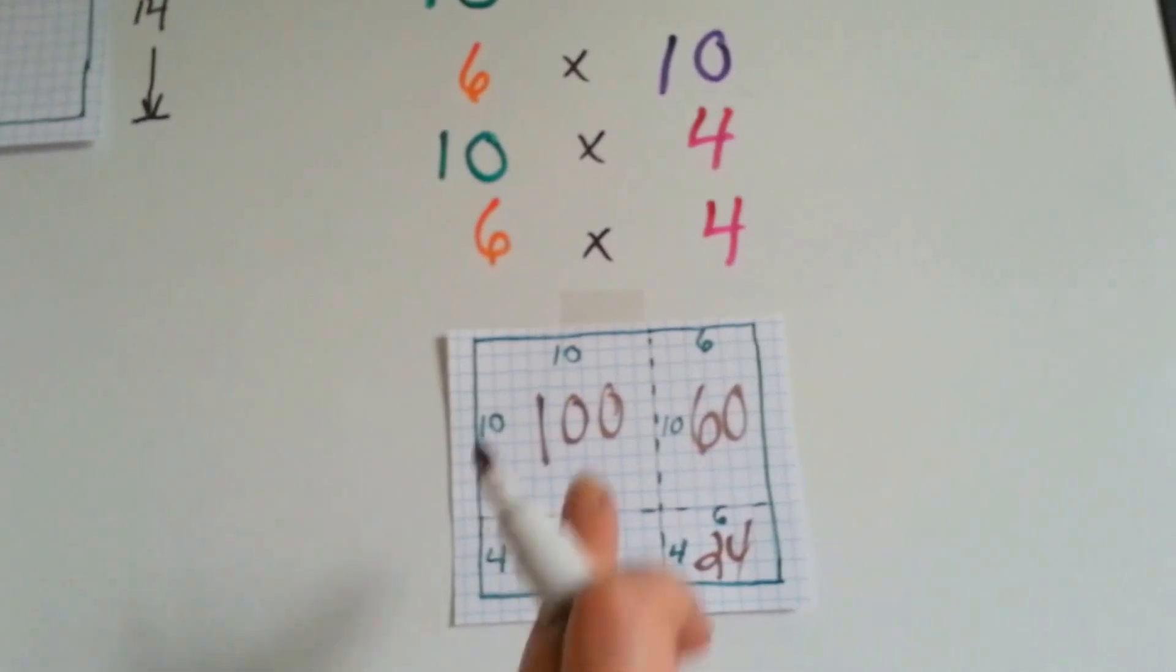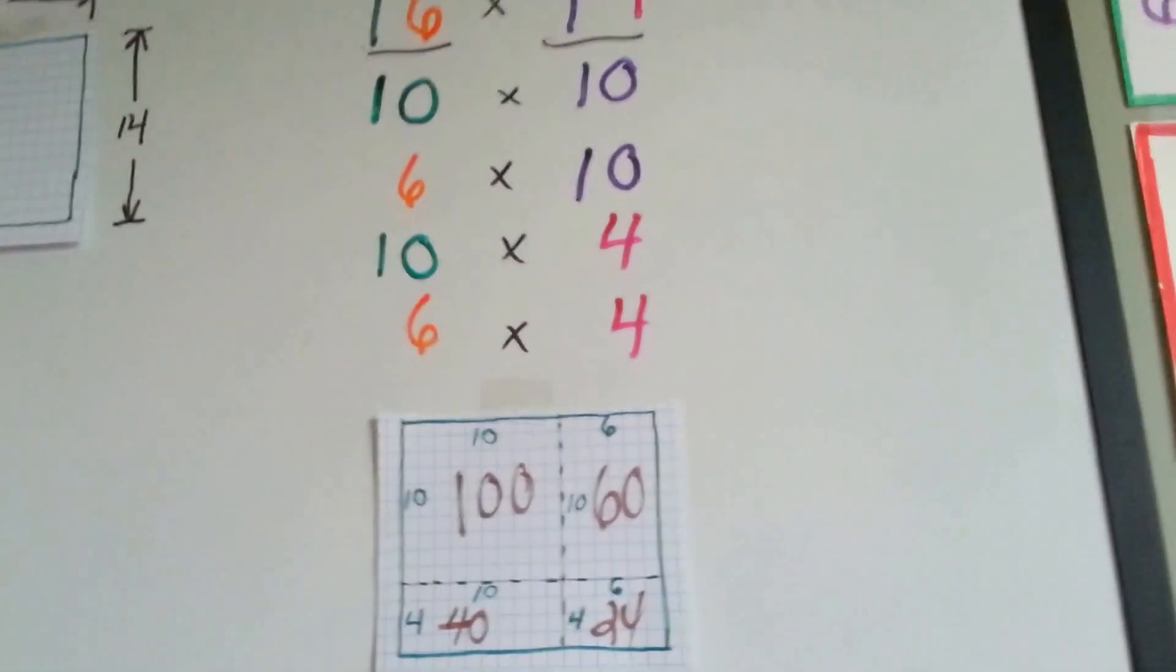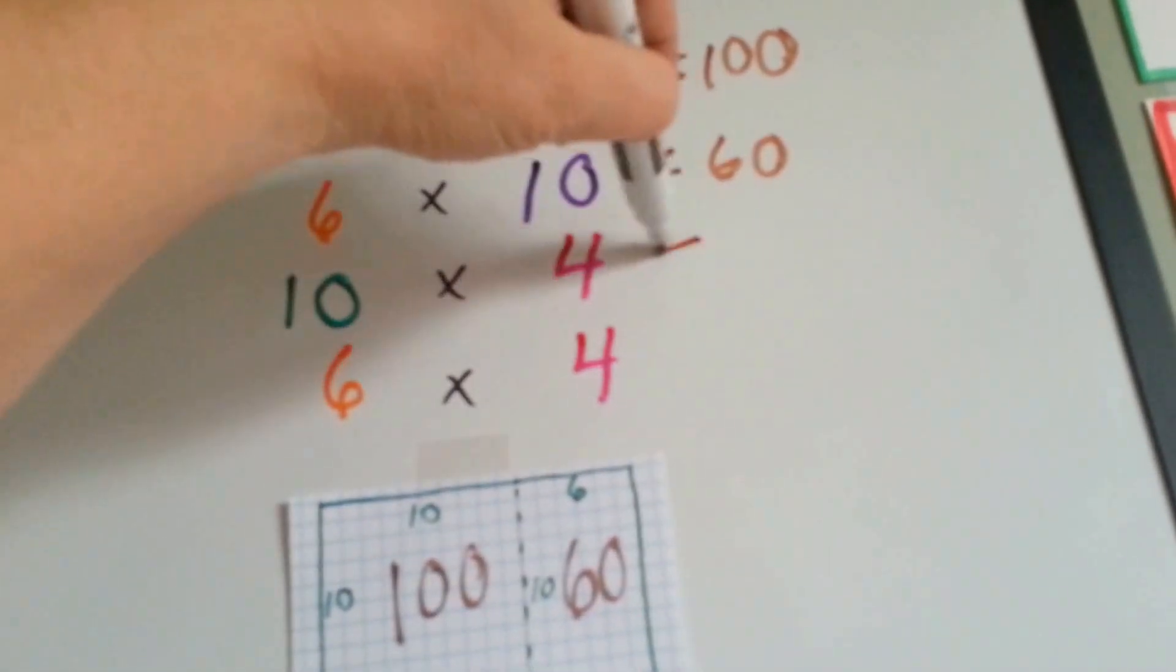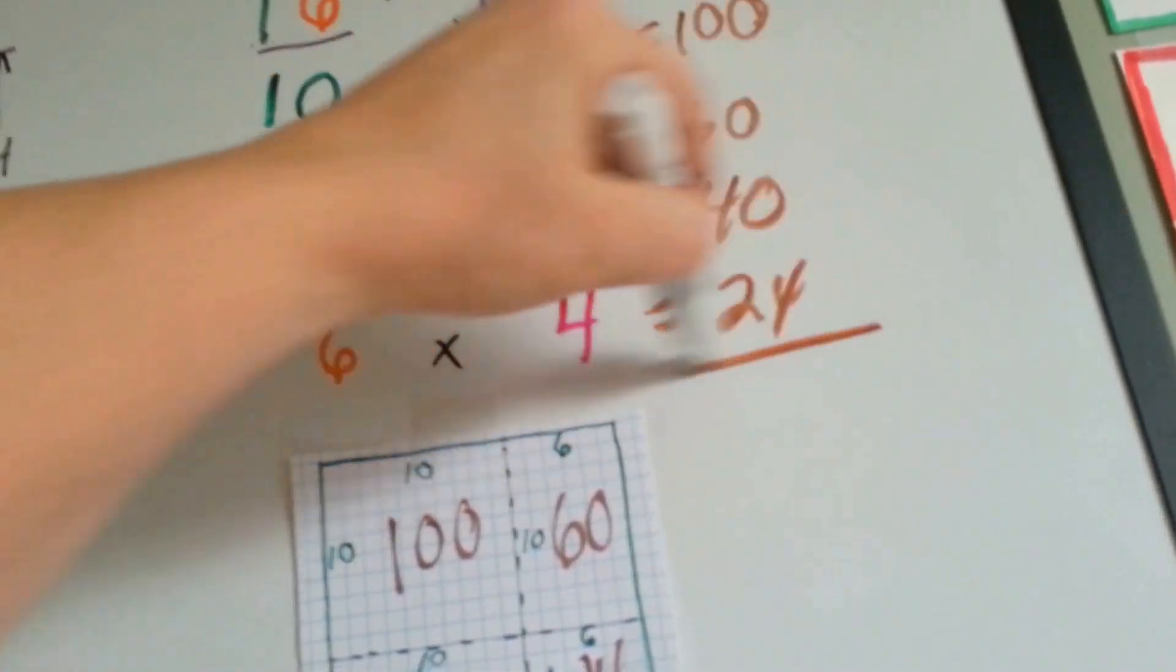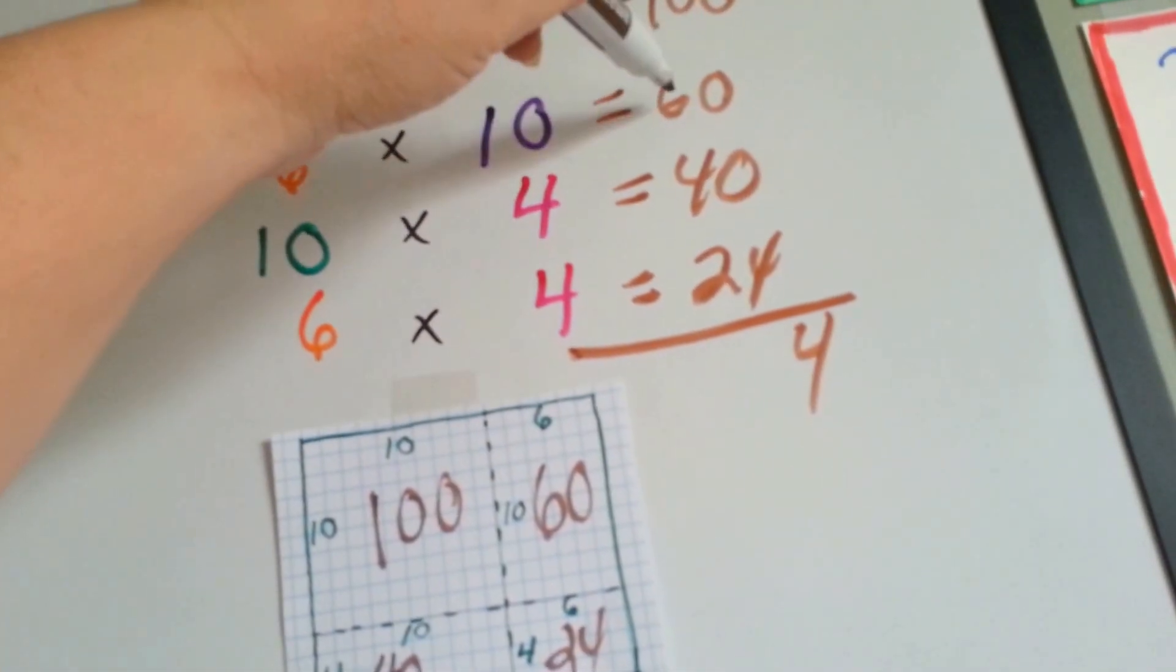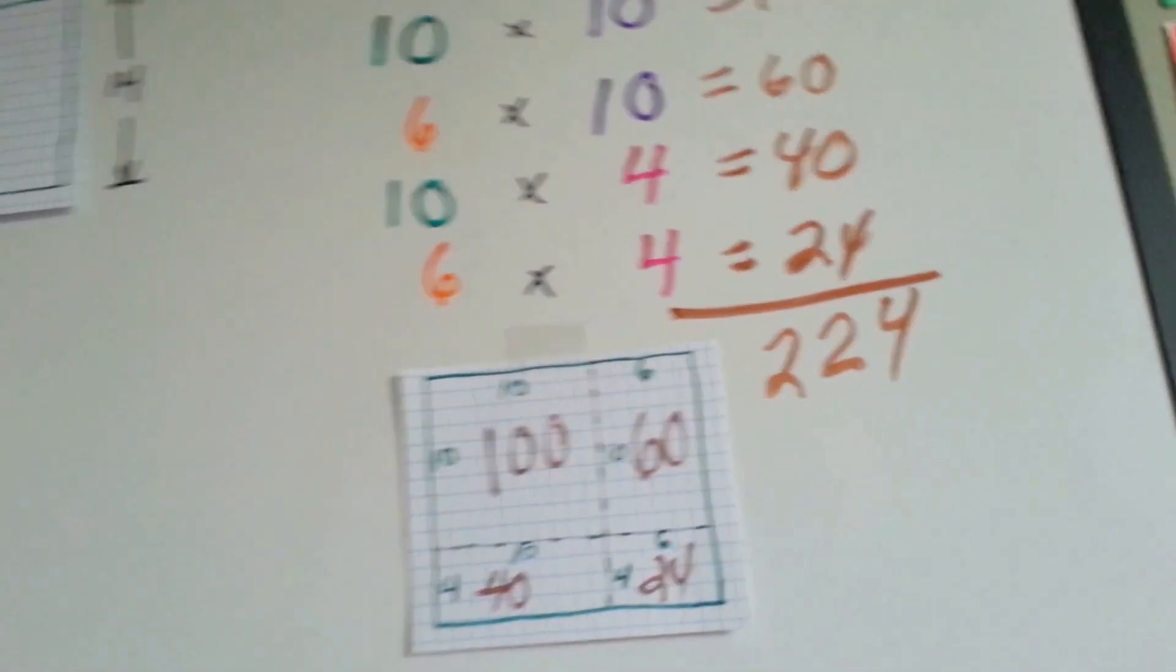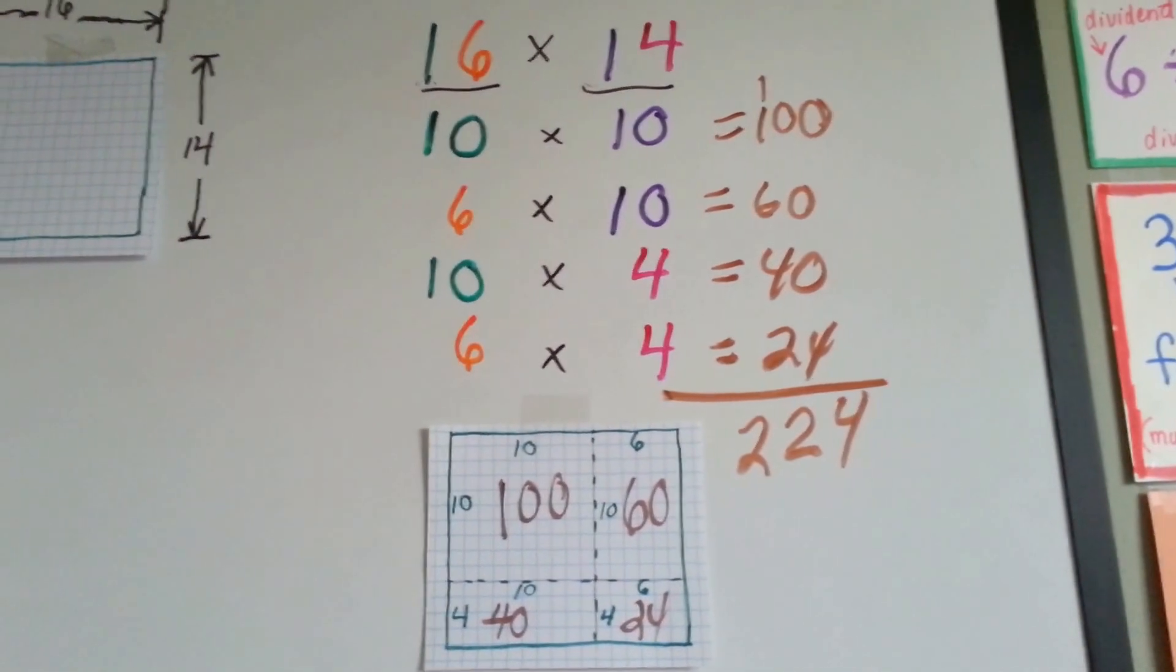Then, all we have to do is add these four numbers together, and we'll know what 16 times 14 is. So, 10 times 10 is 100. 6 times 10 is 60. 10 times 4 is 40. And 6 times 4 is 24. We add these up. 0, 0, 0, and 4 is 4. And 0, 6, 4, and 2 is 12. Carry the 1. Put the 2 down. And 1 and 1 is 2. So, 16 times 14 is 224. Isn't that cool how we got it?